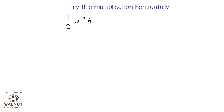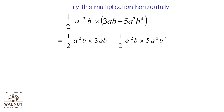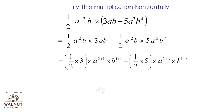1 upon 2 a squared b into (3ab minus 5a cubed b raised to 4) is equal to 1 upon 2 a squared b into 3ab minus 1 upon 2 a squared b into 5a cubed b raised to 4, which is equal to 1 upon 2 into 3 into a raised to 2 plus 1 into b raised to 1 plus 1 minus 1 upon 2 into 5 into a raised to 2 plus 3 into b raised to 1 plus 4, which is equal to 3 upon 2 a cubed b squared minus 5 upon 2 a raised to 5 b raised to 5.